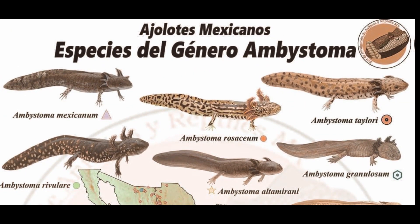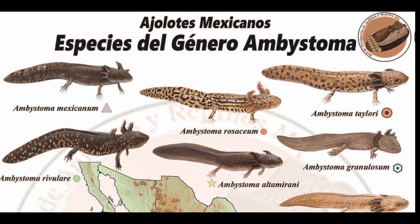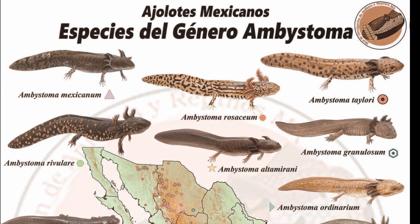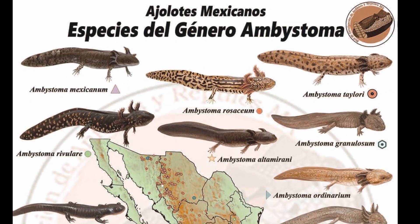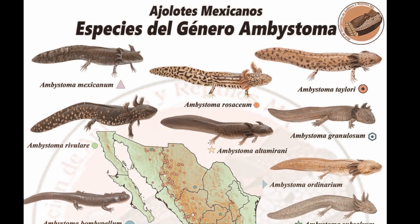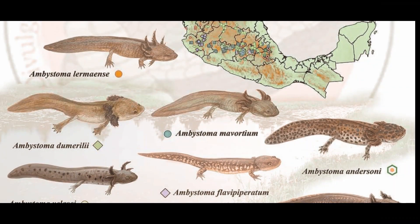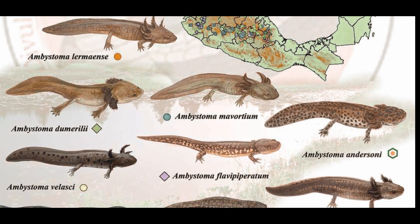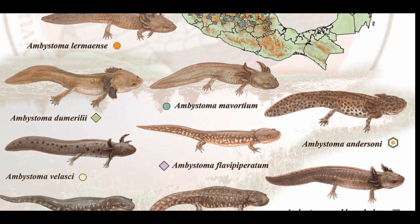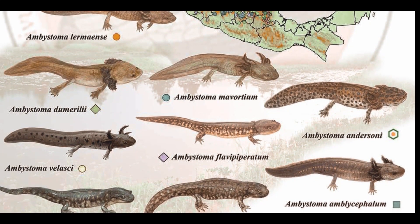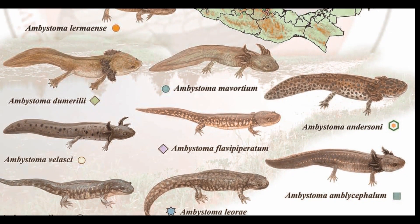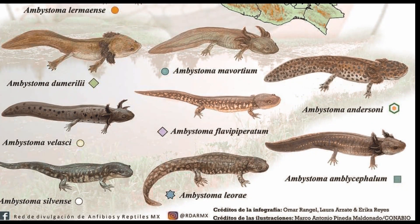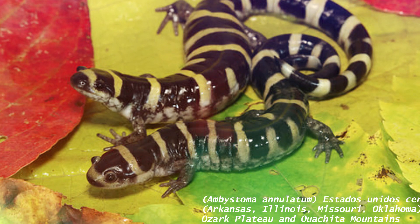En México existen 13 diferentes especies del género Ambystoma, los cuales les dejo en pantalla para que puedan saber más de ellos. Algunos son terrestres y otros son acuáticos. Esto se ha visto mucho en las redes sociales, sobre todo en los de habla hispana. Pero en esta ocasión me gustaría hablarles más de los ajolotes o ambystomas de la Unión Americana y Canadá. Vamos a ahondar en el tema un poco más y ver las especies de las cuales casi no tenemos información, y con las cuales han sido hibridados la mayor parte de los ajolotes mexicanos para posteriormente ser domesticados y producir raras morfos.